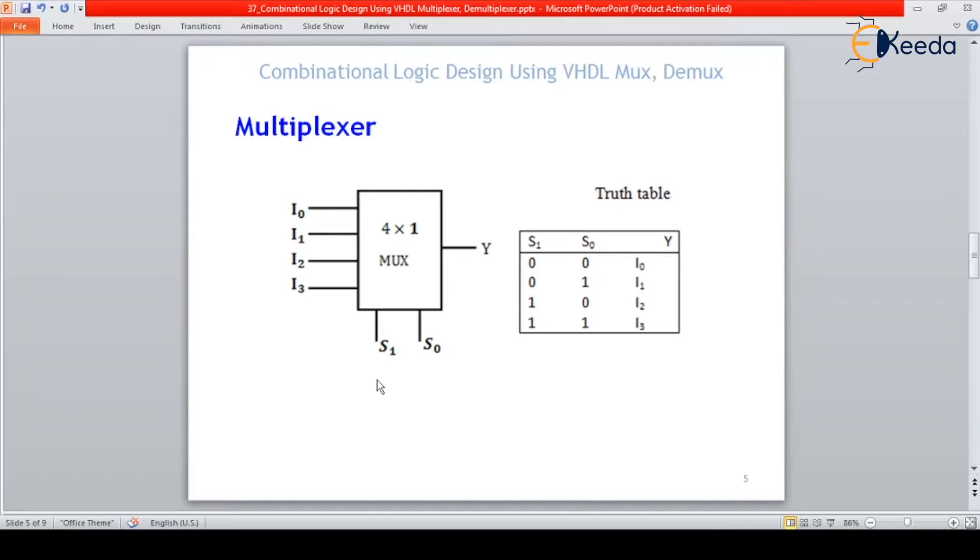It depends on the number of inputs we are choosing. For example, if we are choosing number of inputs are eight, then the select lines will become three. If it is sixteen, select line becomes four. So there is always a relation between input to select line combination. We know very well about the truth table: when select line is 00, i0 will be connected to y. When 01, i1 will be connected to y. When 10, i2 is connected to y, and i3 is connected to y if it is 11.